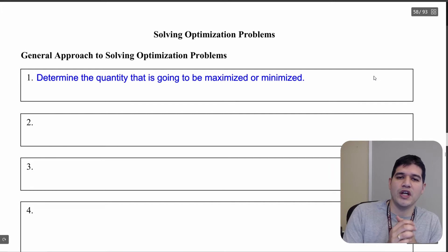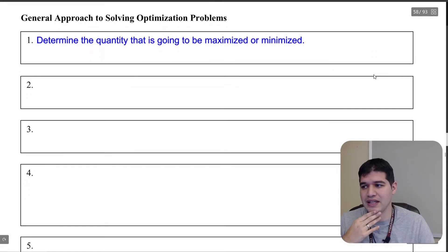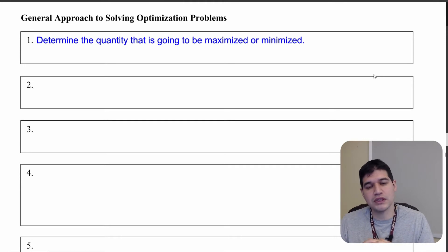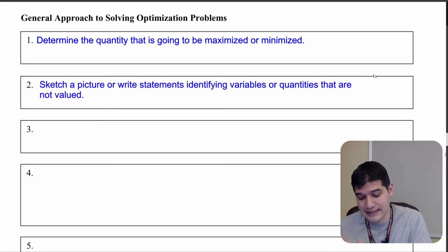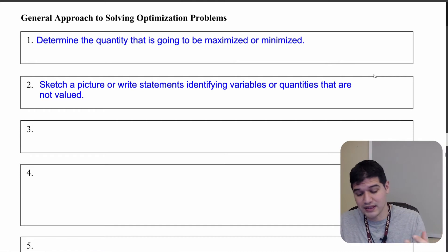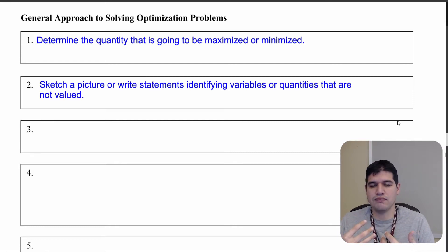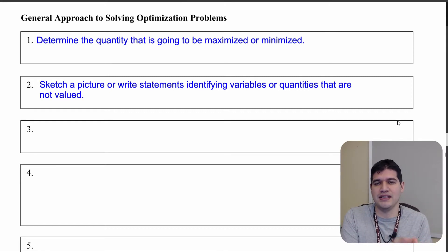Once you have an idea of what you actually want to maximize or minimize, you know — okay, this is my goal, this is what I need to answer. The next step is not always necessary, but sometimes it's really going to help you come up with formulas. So sketch a picture or write down statements that identify the variables or quantities that aren't given a strict value, but that you can use to aid in maximizing or minimizing.